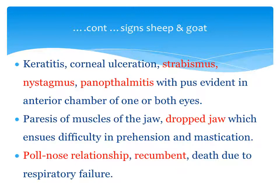When the disease is in a septic form, it may produce inflammation in almost all organs or a few organs, with micro abscesses or pus in organs. The eye is one target organ: there is keratitis, corneal ulceration, strabismus, nystagmus — meaning involuntary movement of the eyeball — and panophthalmitis, which is inflammation of almost all parts of the eye, with pus evident in the entire chamber of one or both eyes.